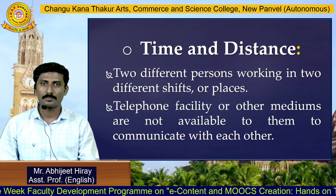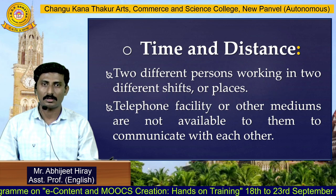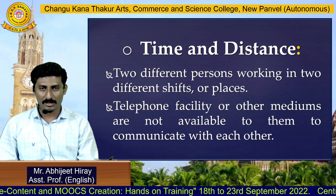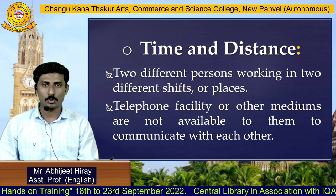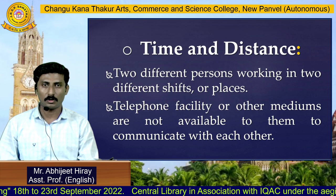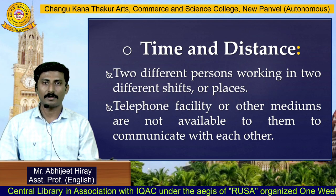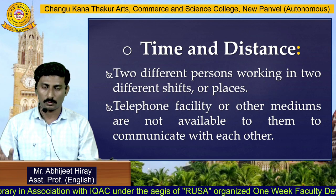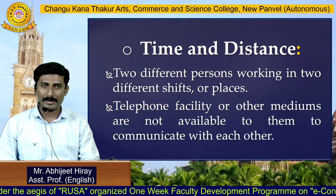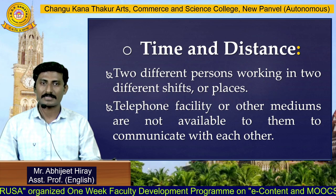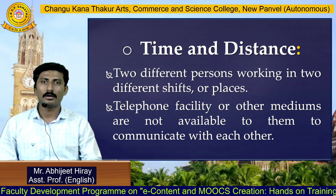The next point is time and distance. Two different persons working in two different shifts or places, where telephone or other mediums are not available, cannot communicate with each other. In multinational corporations, when two people work different shifts — say day and night — or at different branches, they will not be able to communicate. If telephone or other mediums are not available to them, then there will be a barrier to their communication.